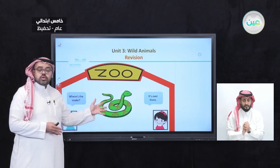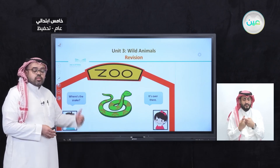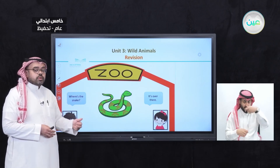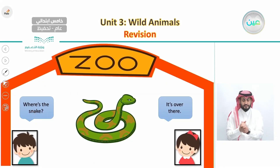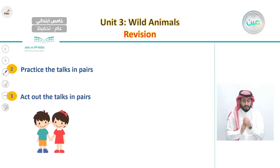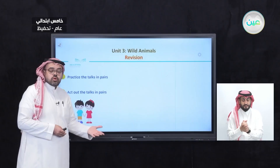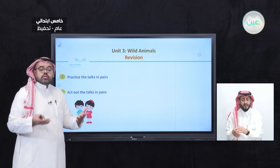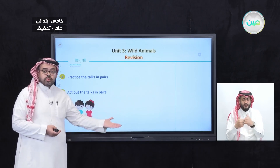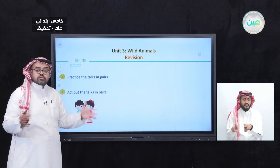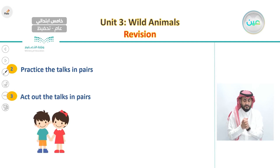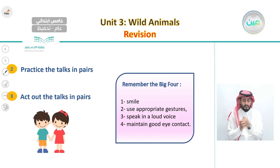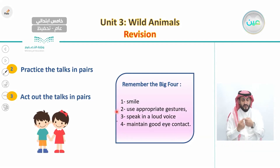These are the animals we learned about in the first lesson: the lion, elephant, baby monkey, and the snake. I encourage you to practice these conversations — if you visit the zoo or talk with family or a partner, describe animals and act them out. And don't forget the Big Four: smile, use gestures, speak in a loud voice, and maintain good eye contact.